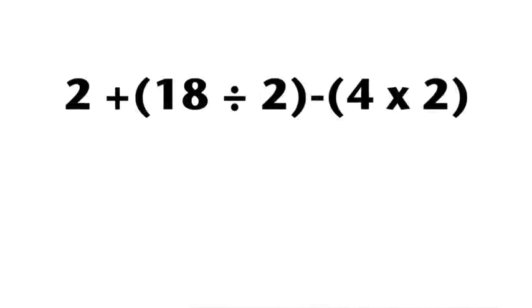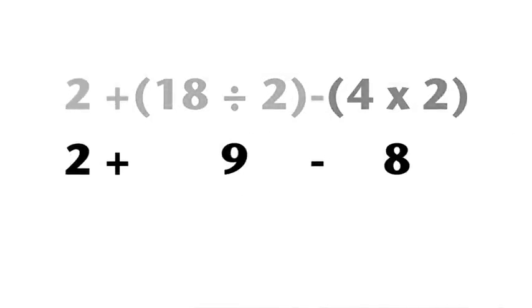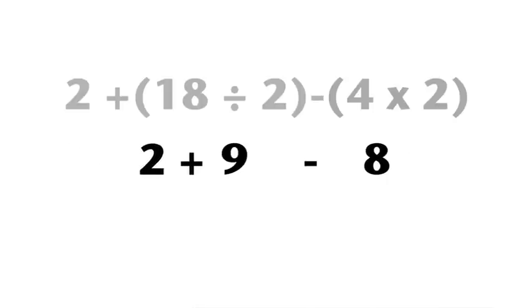Of course, an expression is read from left to right, like sentences in a book. Let's go back to our example. Two plus eighteen divided by two minus four times two. The first operation we perform is eighteen divided by two. The second computation we complete is four times two. So our new expression reads two plus nine minus eight. After we add and subtract, our final answer is three.